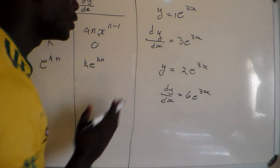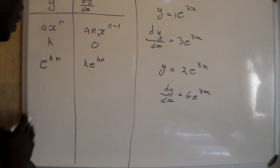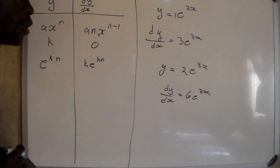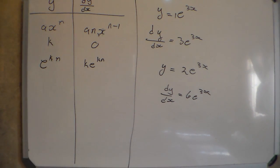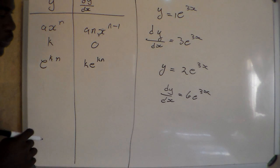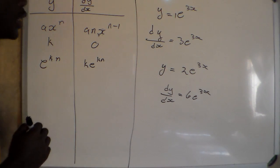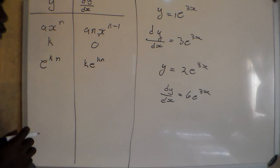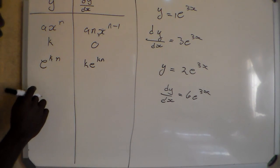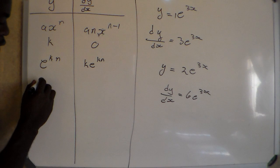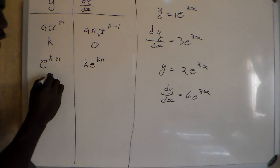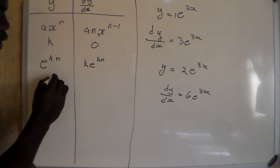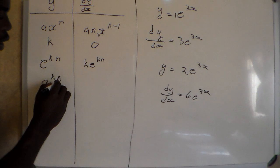These are the standard integrals for those forms. Now let's look at deriving a to the power kx, where a is a constant base and k is a constant multiplied by x.